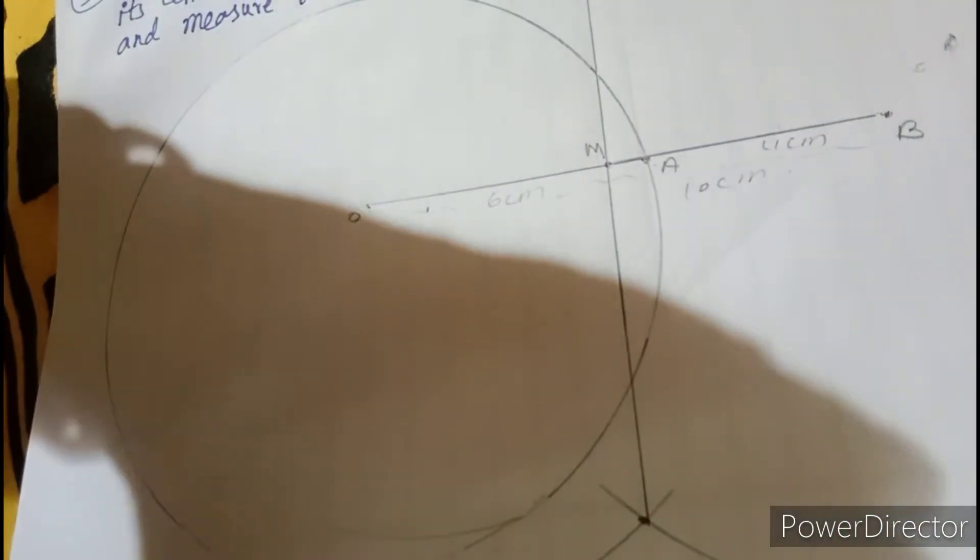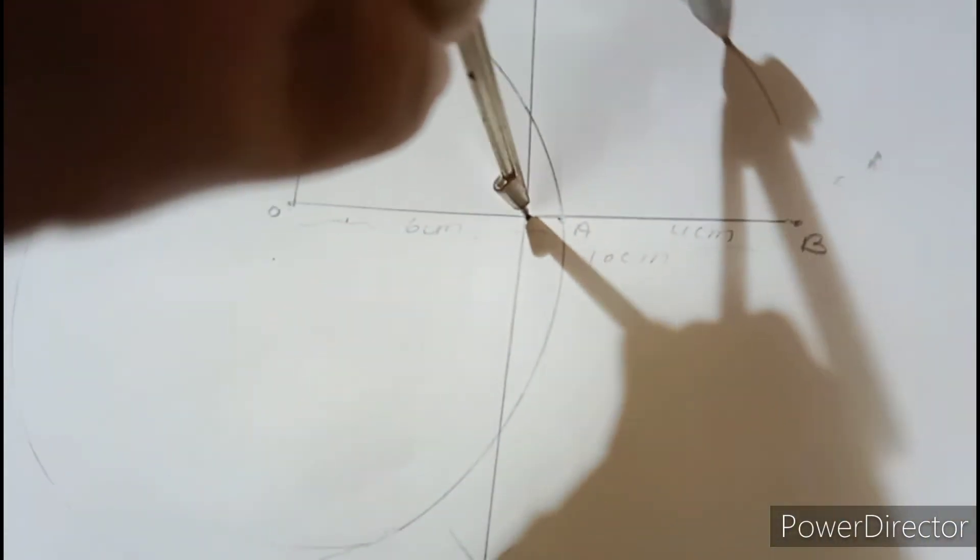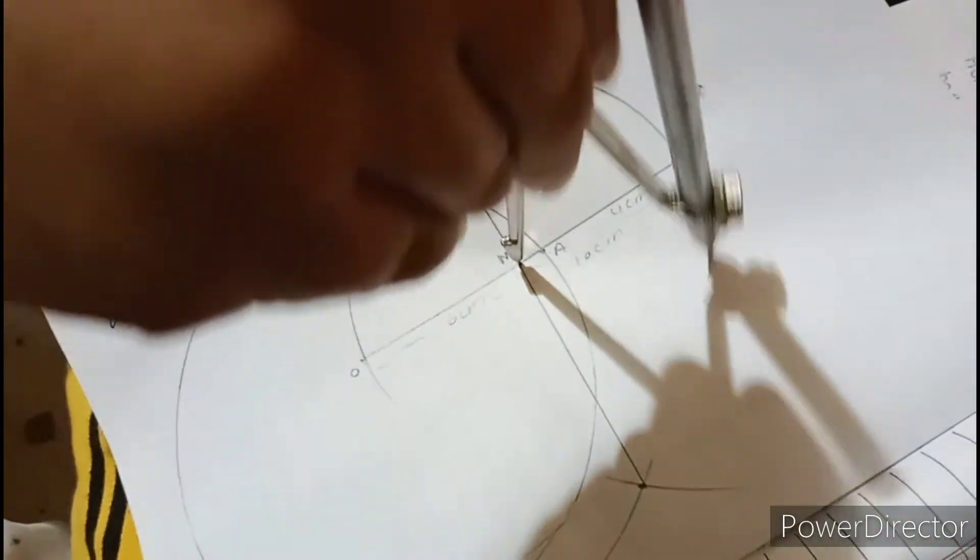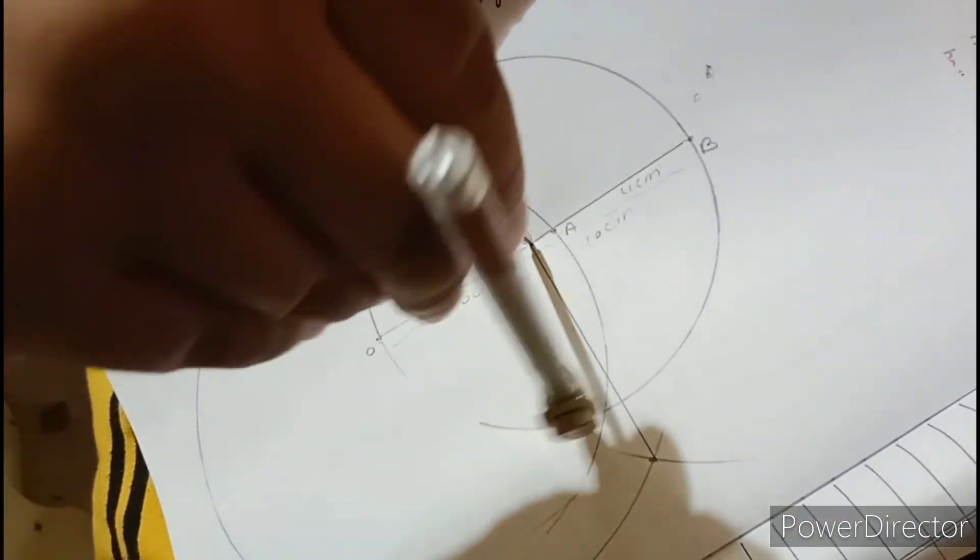Now, put this pointer on M. Put this pointer on M. From here, extend your pencil up to O. Then, same to B. See? Both are touching at same distance. So, now draw a circle like this. Do not move your compass. Or you can say... See? A little difficult for me to draw. Because a book is very small and this pencil is not sharp. Please use a sharp pencil.